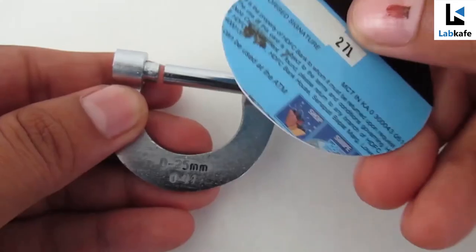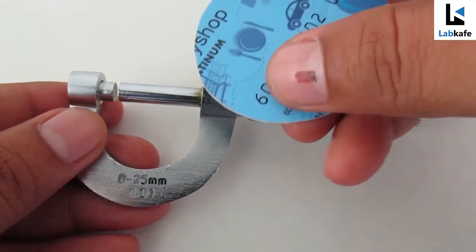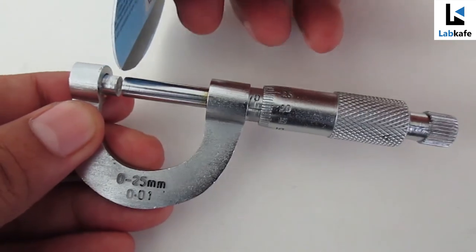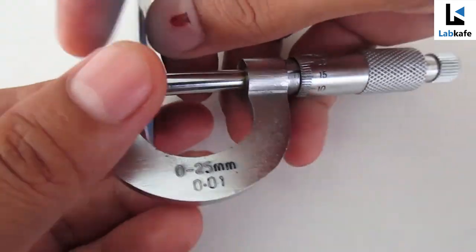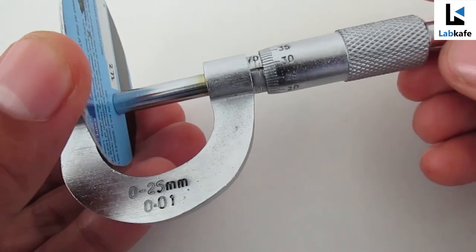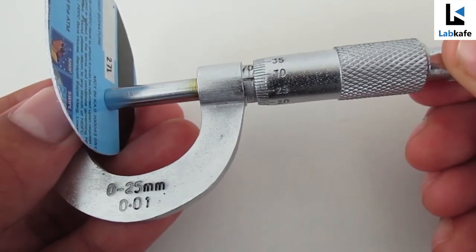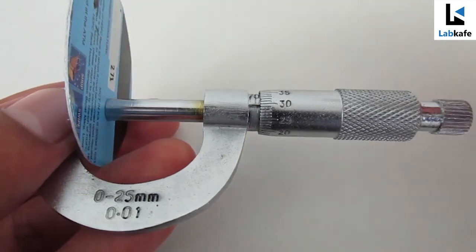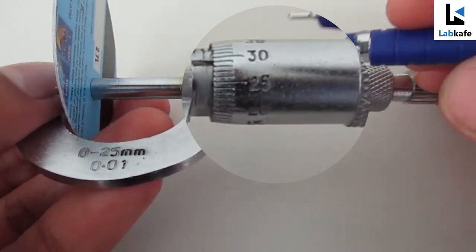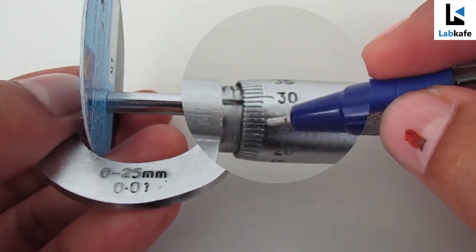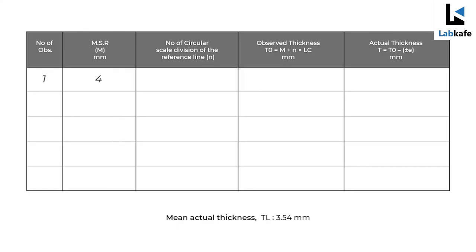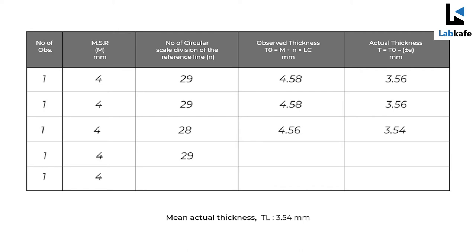Procedure to measure the thickness of an irregular lamina: take the screw gauge and insert the lamina between the stud and spindle, and rotate the ratchet gently until a click sound is heard. The main scale reading is 4 and the circular scale reading is 29. Take three to four more data points at different places of the lamina and record the data in the table.